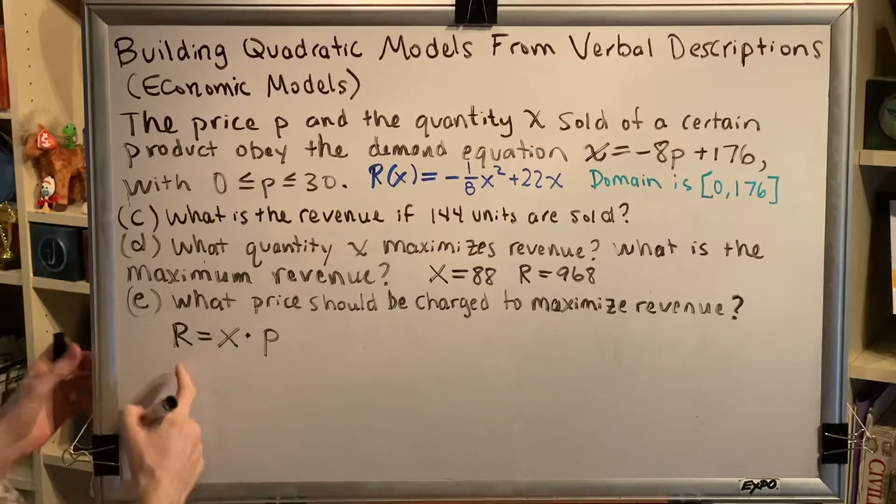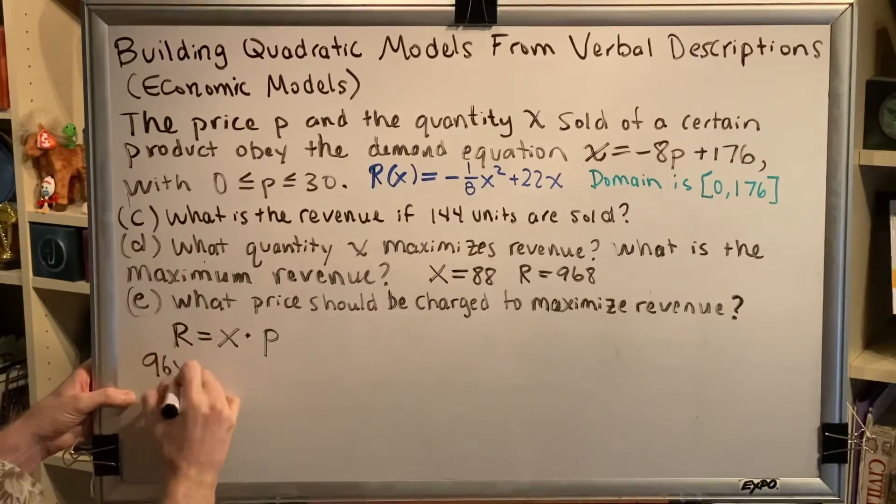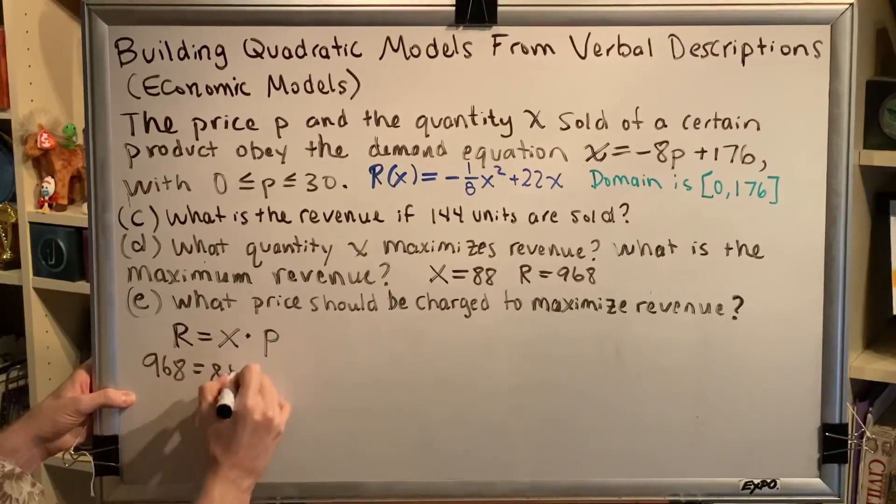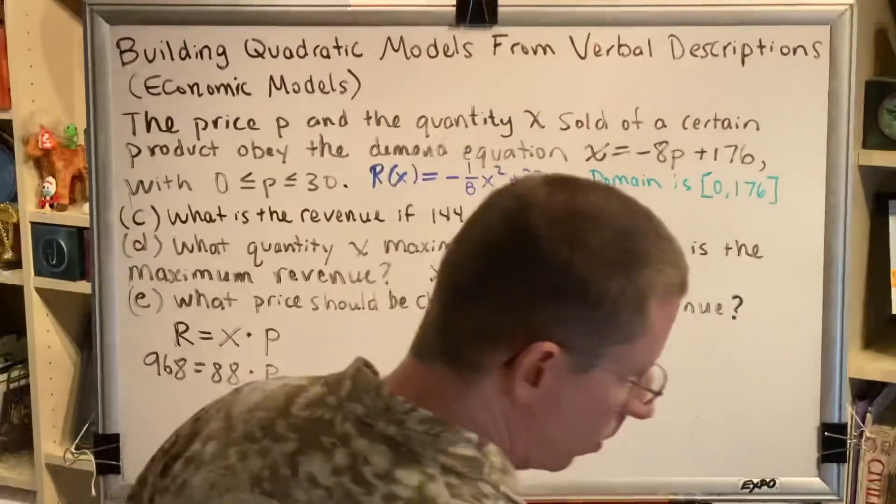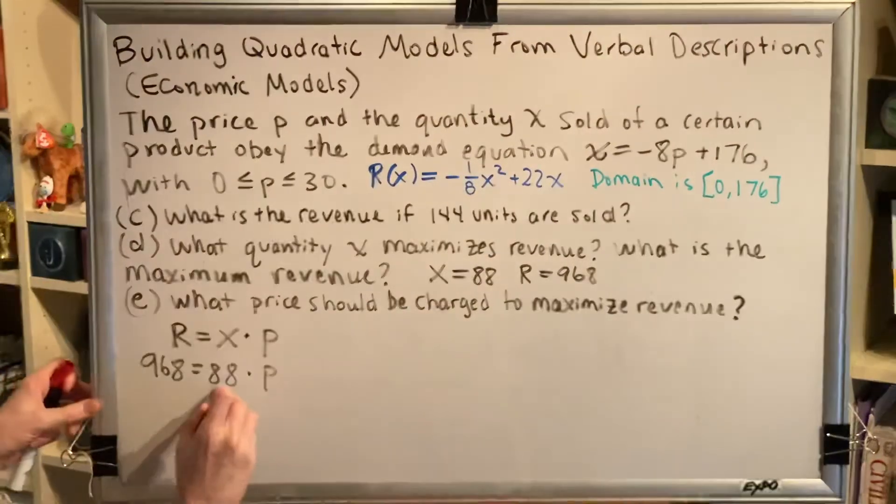r is 968. x is 88. p is what we're trying to solve for. So, divide both sides by 88.